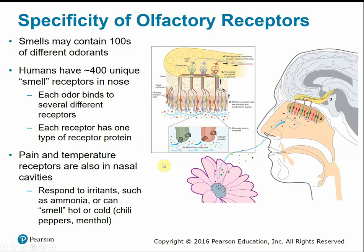Pain and temperature receptors are also in the nasal cavity, allowing us to detect irritants like ammonia and to detect hot and cold smells — such as detecting if something is spicy or has menthol. Different types of olfactory smell receptors respond to specific types of odor particles.